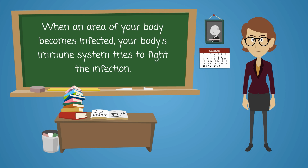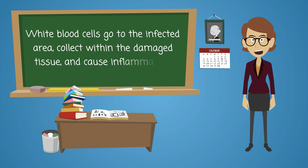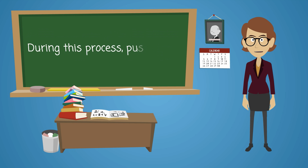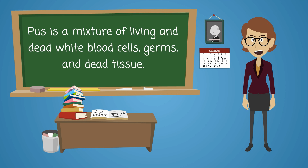When an area of your body becomes infected, your body's immune system tries to fight the infection. White blood cells go to the infected area, collect within the damaged tissue, and cause inflammation. During this process, pus forms. Pus is a mixture of living and dead white blood cells, germs, and dead tissue.